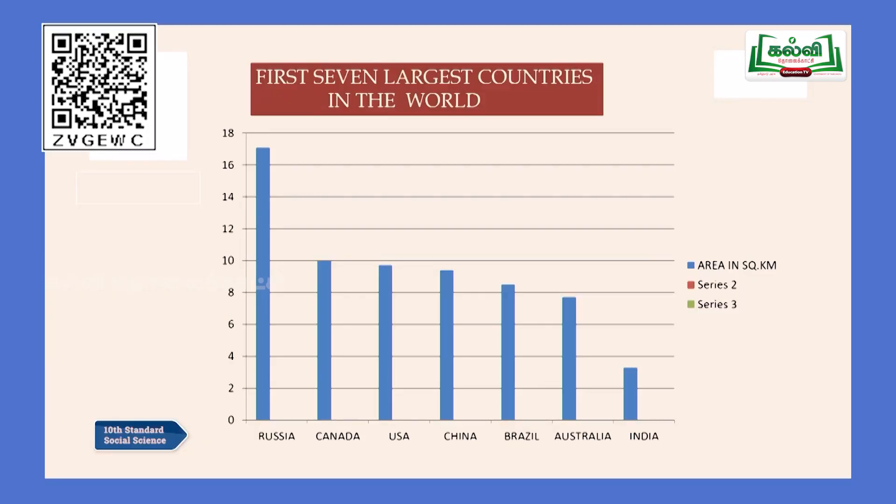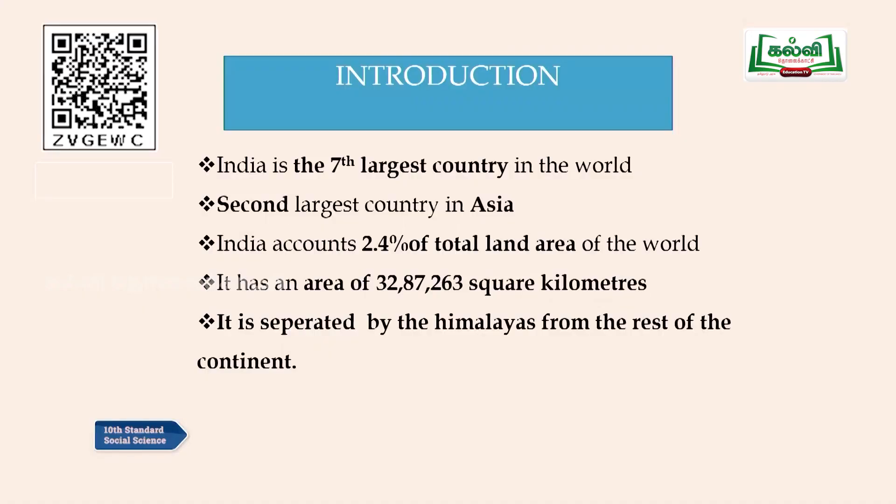Look at this bar diagram showing the first seven largest countries in the world. India ranks seventh largest country in the world. The first largest country is Russia, second is Canada, third is USA, fourth is China, fifth is Brazil, sixth is Australia, and the seventh position goes to India.